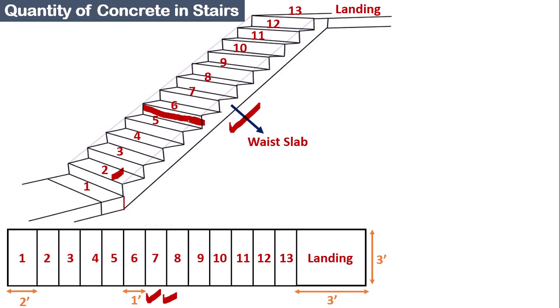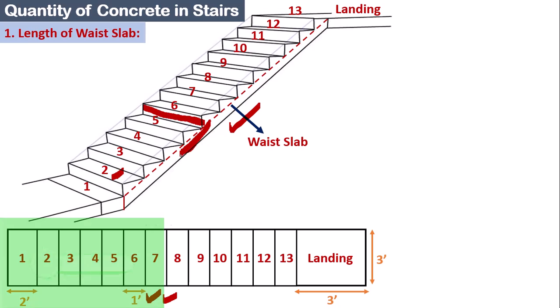The waist slab is the slab which supports the steps of the stairs. If we separate the steps from the waist slab, the red line indicates this portion — that is actually the waist slab which supports the steps of the stairs. Our first step is to calculate the length of the waist slab.